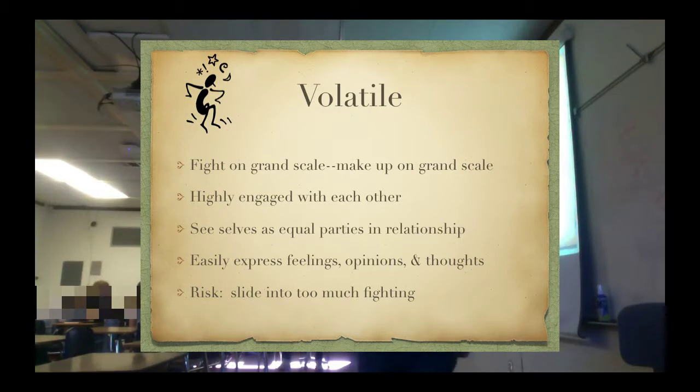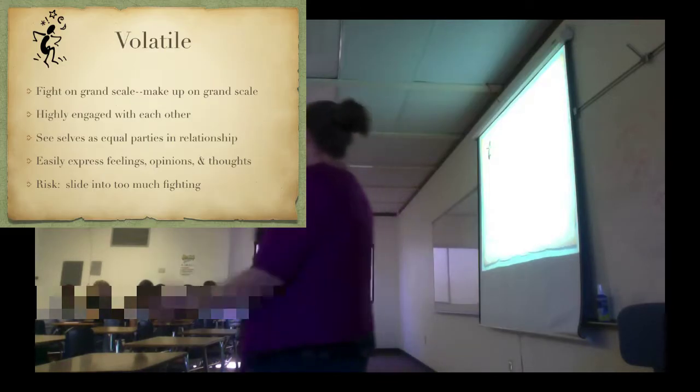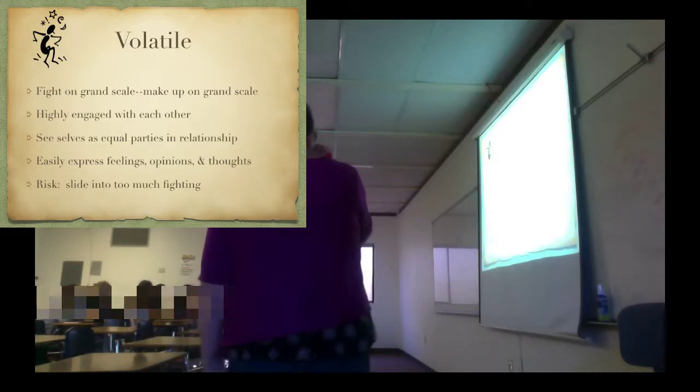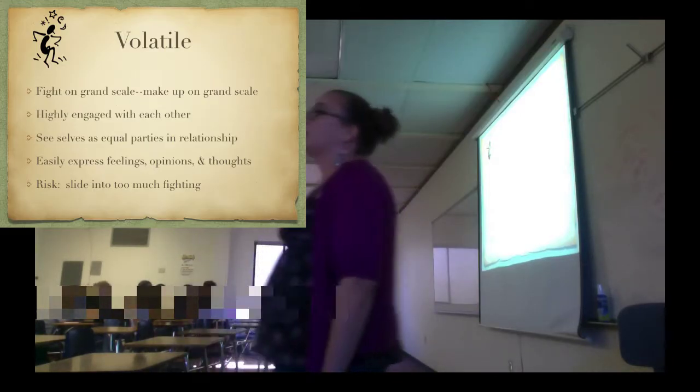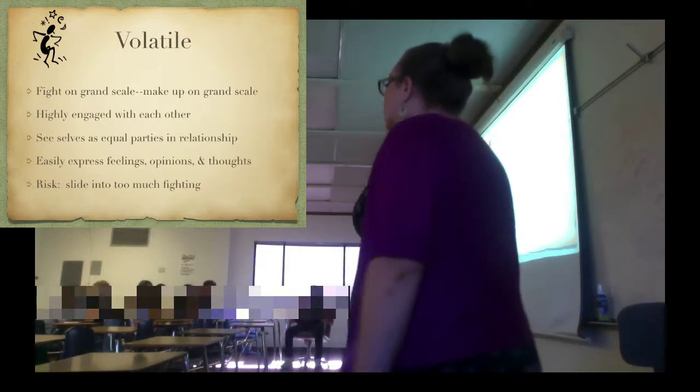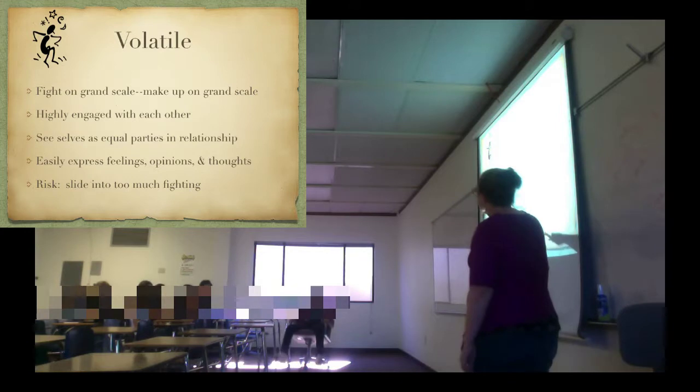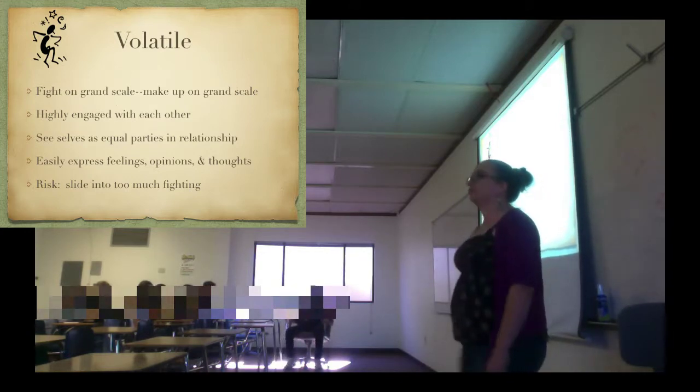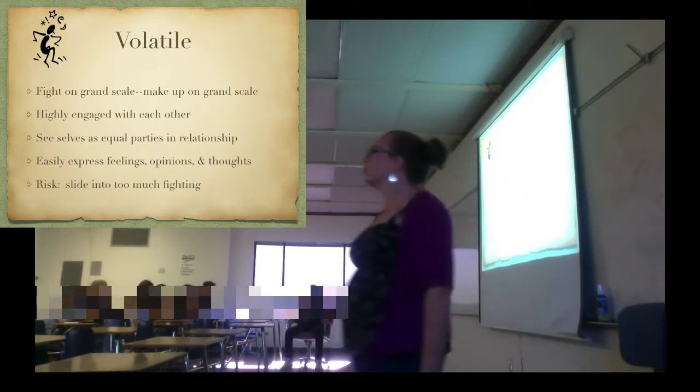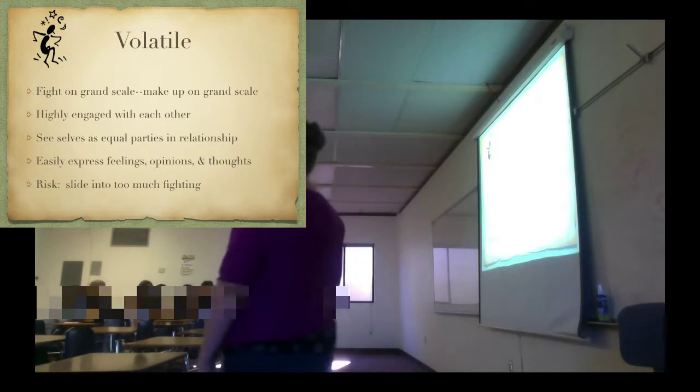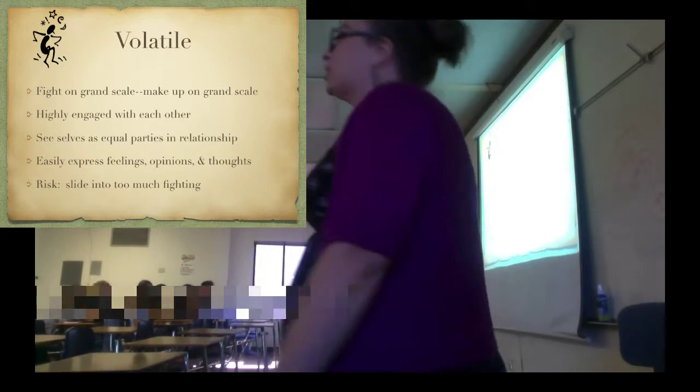Volatiles do not have that problem. They fight on a grand scale, make up on a grand scale. Very engaged with each other. Very emotionally intense. Very emotionally connected. They see themselves as equal in the relationship, which is why they're willing to argue it out. Easily express feelings, opinions, and thoughts, but they can have way too much fighting. This is the couple that has a police call on them. Throws the plates. But they tend to enjoy it.